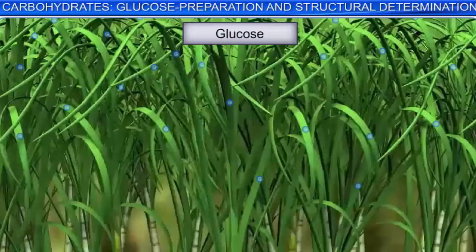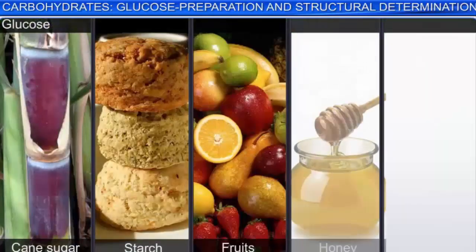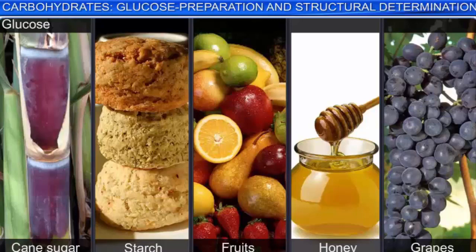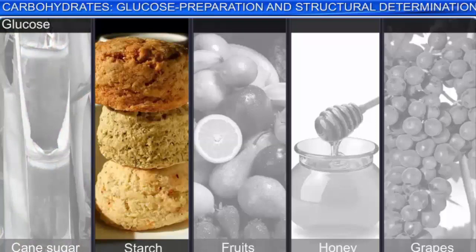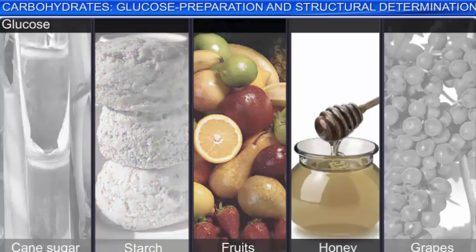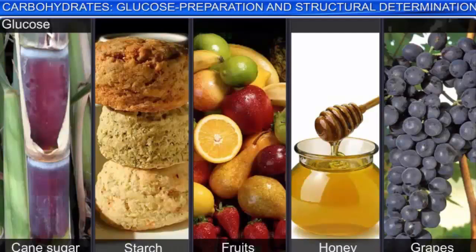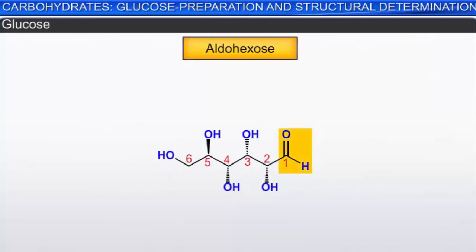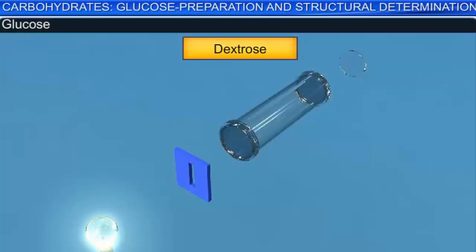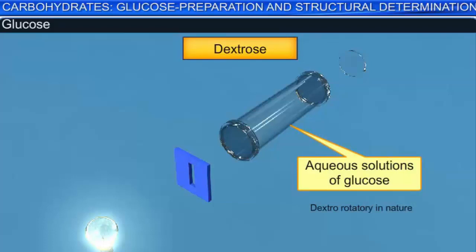Glucose is widely found in nature, in the free as well as in the combined state. In the combined state, glucose occurs in cane sugar, starch, and so on. It is present in sweet fruits as well as in honey. Ripe grapes are also rich in glucose. Glucose is the monomeric unit of larger carbohydrates such as starch and cellulose. Glucose is an aldohexose, which is probably the most abundant organic compound found on the earth. Glucose is also called dextrose, because aqueous solutions of glucose are dextrorotatory in nature — rotating plane polarized light towards the right.